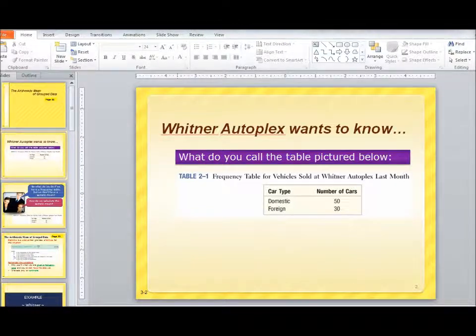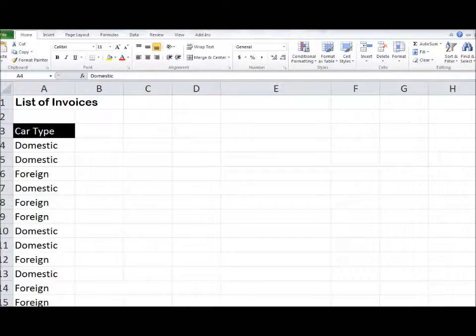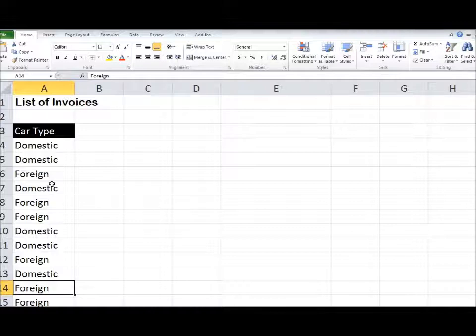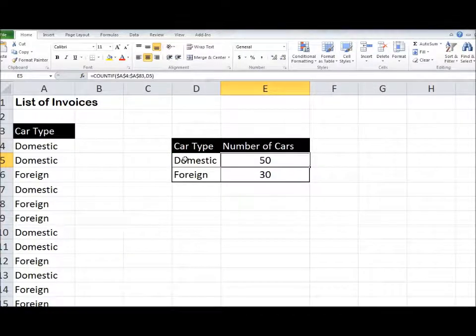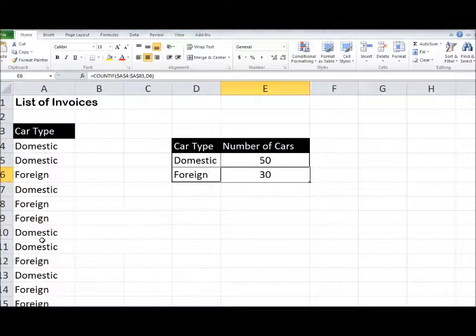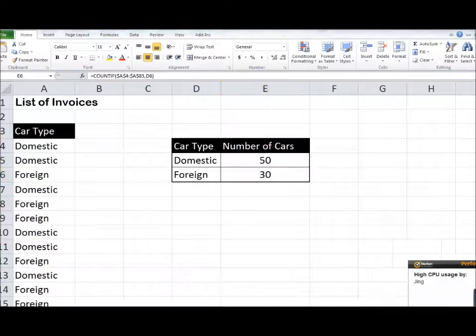What you're used to after coming out of chapter 2 is probably a table that looks like this. I've switched into Excel here. Somebody would have gone through the invoices and said this is a domestic car, a domestic, a foreign one, a couple of foreigns here, domestic, foreign. They just literally wrote down the nominal data, right? But then they had to organize that. They might have used a tool like Excel to do something like this. I'm using the Excel COUNTIF function and I've simply told Excel to count every time it sees the word domestic in this list or to count every time it sees the word foreign.